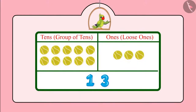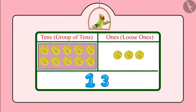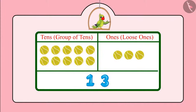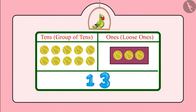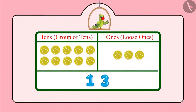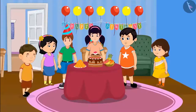So children, do you remember 10s and 1s? Here we have 13 balls. That is 1 ten in which there are 10 balls, and 3 ones in which there are 3 balls.